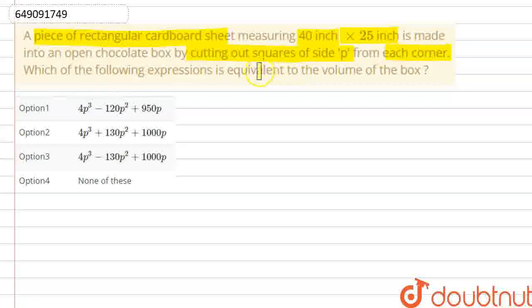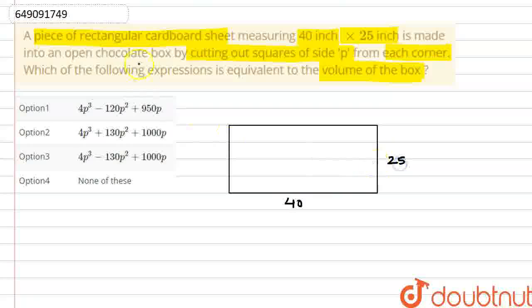Each of the following expressions is equivalent to the volume of the box. So, we have to find out the volume of the box. If we draw this diagram, this was our cardboard sheet. Something like this. The length was 40 and width was 25. And what did we say?